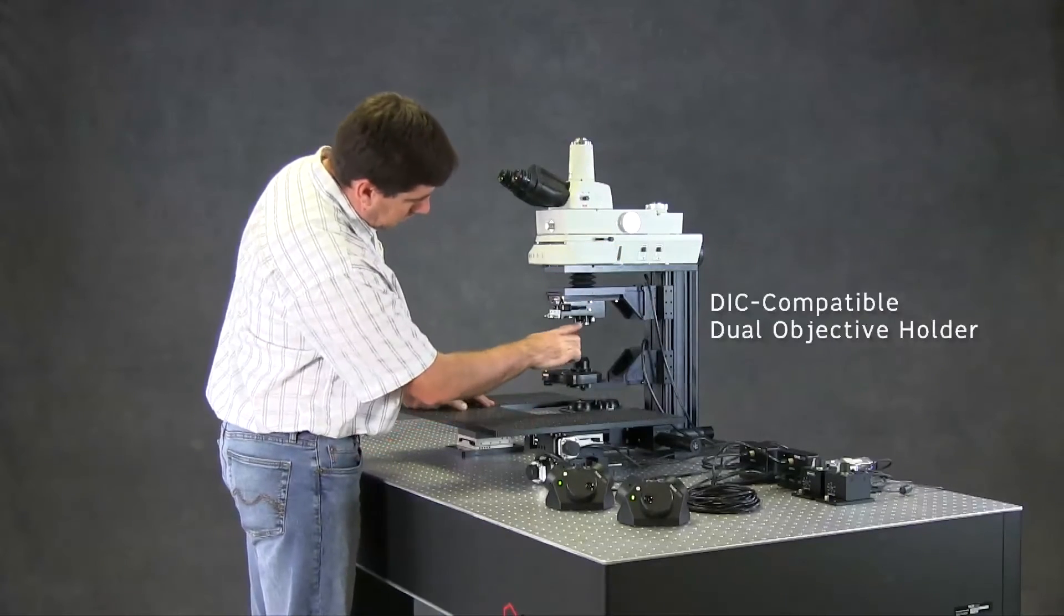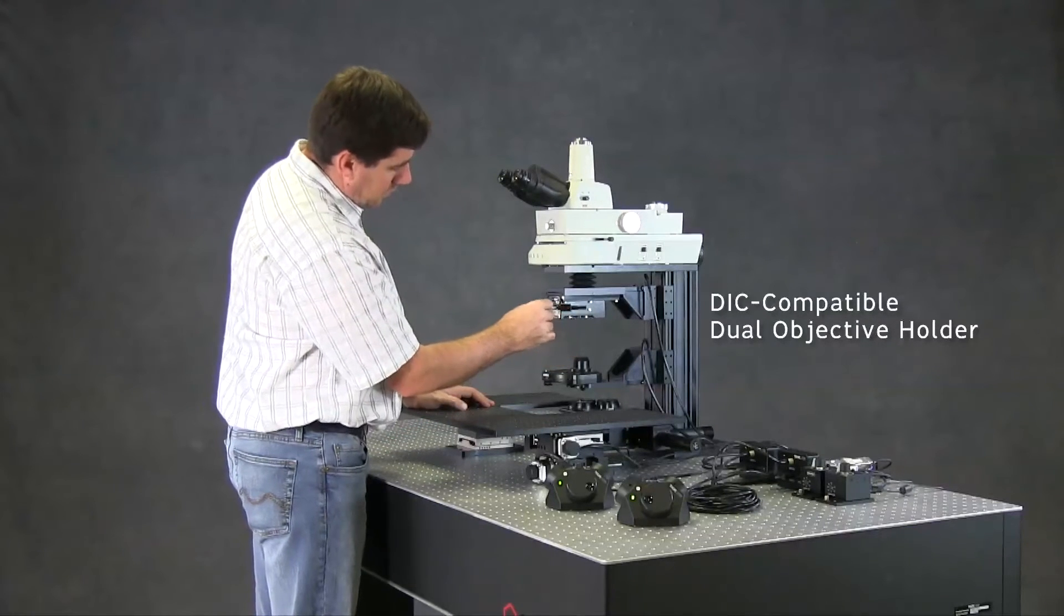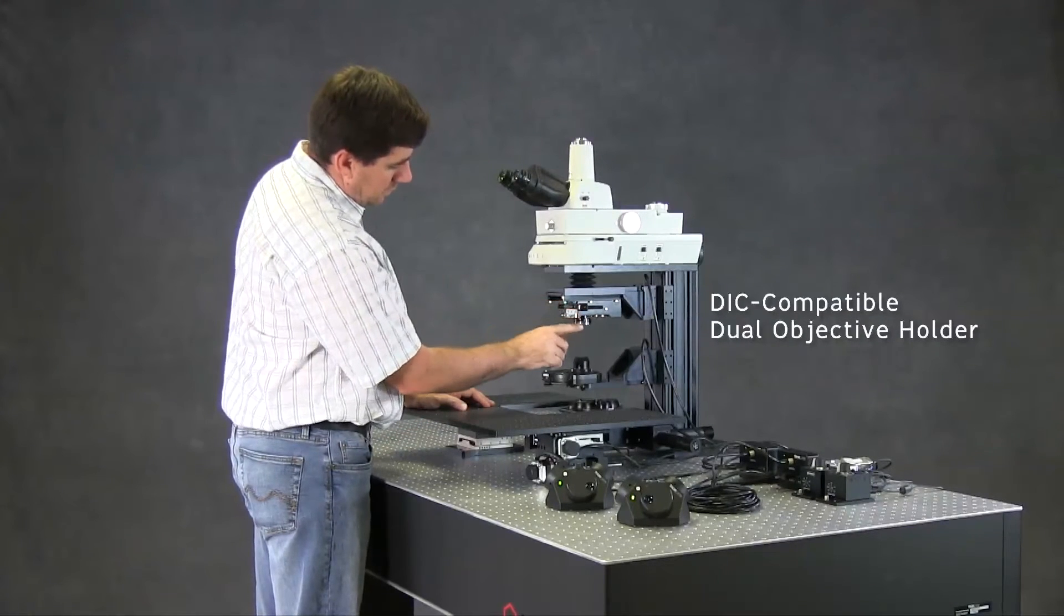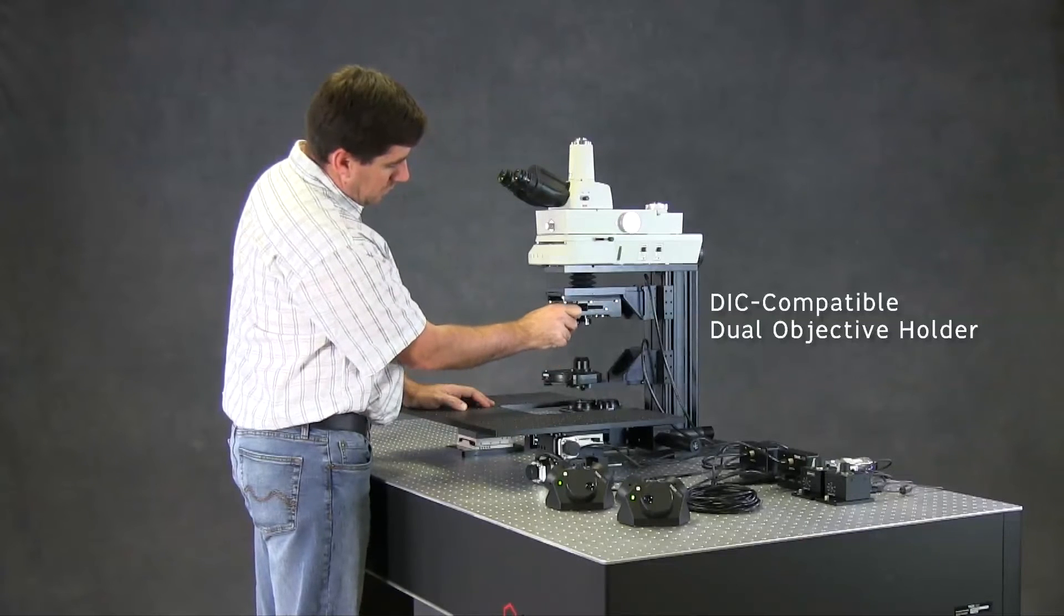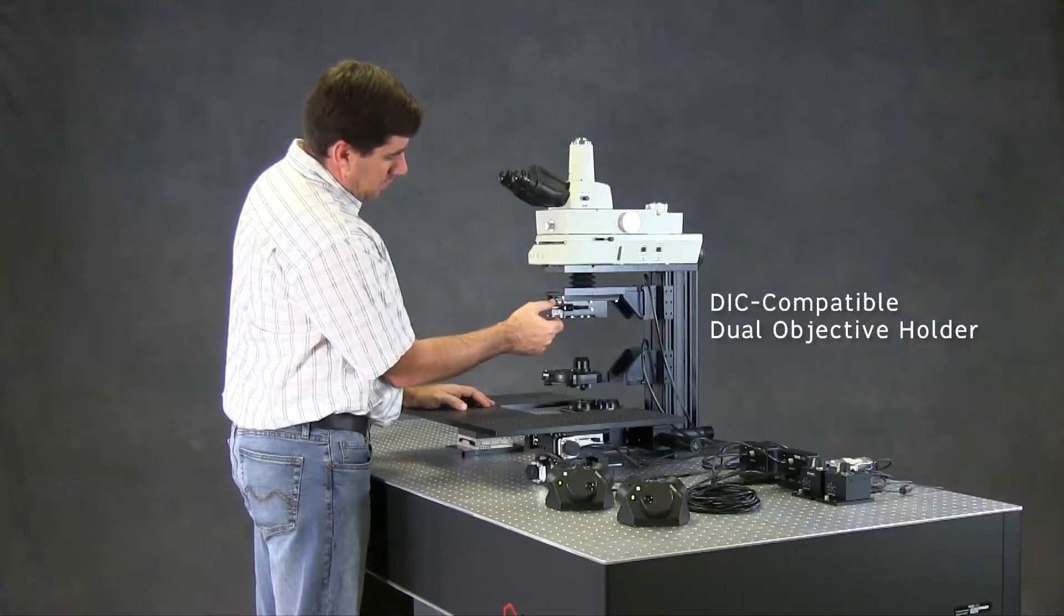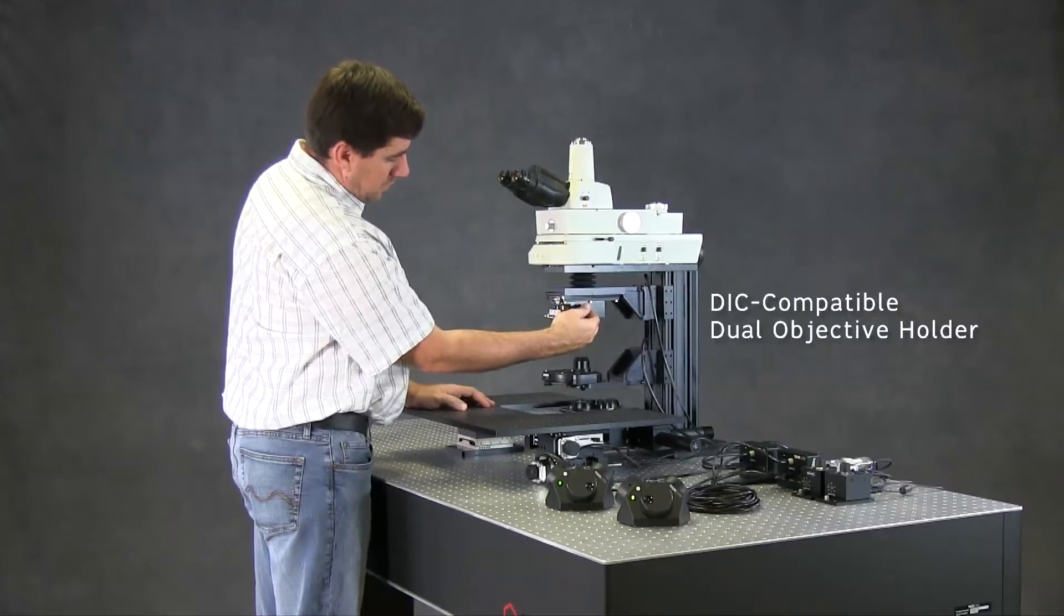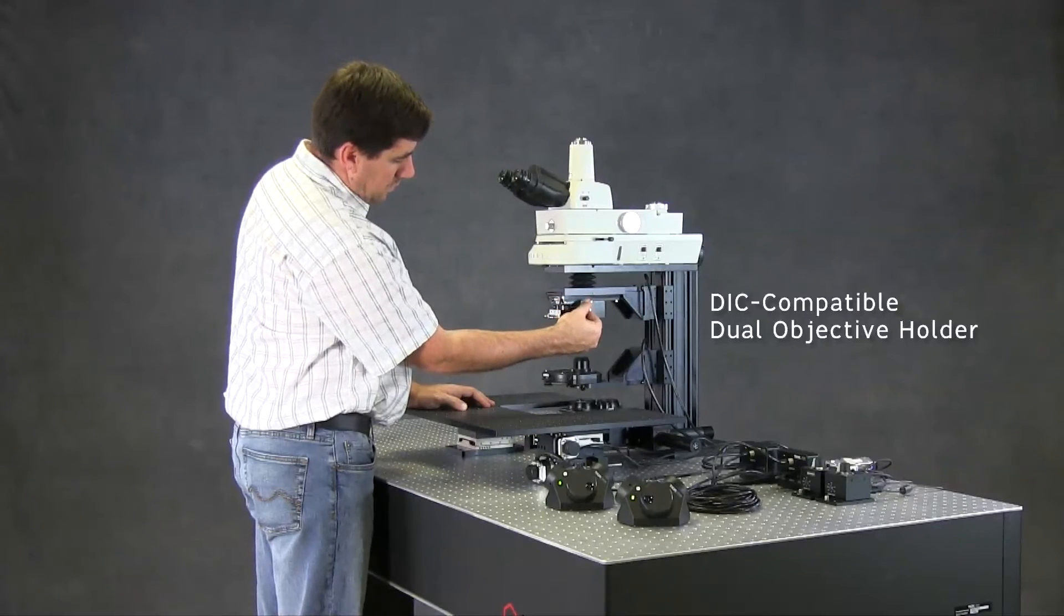As part of the DIC beam path, each position in the dual objective changer has a slot that accepts a DIC objective prism. The knobs on the objective changer rotate to fine-tune the system for par-focality.